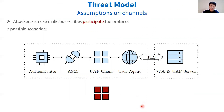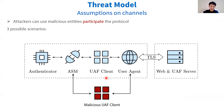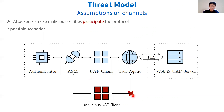We assume different malicious entities, such as the ASM and UAF client, can be installed. The attacker can use these malicious entities to participate in the protocol and communicate with some benign entities, but not every entity. There are three possible scenarios where the malicious entity is the UAF client. First, the malicious UAF client can communicate with both ASM and user agent. Second, the malicious UAF client can only communicate with the user agent, but not with the ASM. Third, the malicious UAF client can only communicate with the ASM, but not with the user agent.